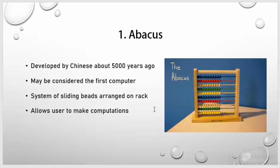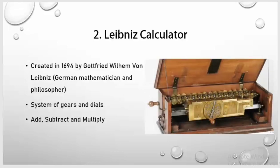Second one is Leibniz Calculator. It was created in 1694 by Gottfried Wilhelm von Leibniz. He was a German mathematician and philosopher. This machine worked by a system of gears and dials, and this machine could add, subtract, and multiply.